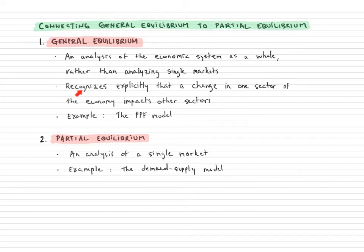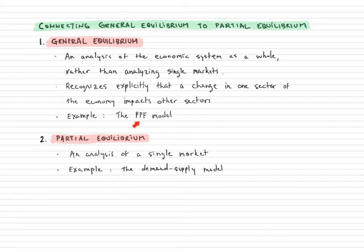This recognizes explicitly that a change in one sector impacts the other sector. The most obvious model is the production possibilities frontier model, the PPF model.